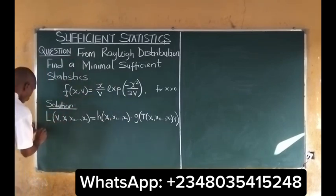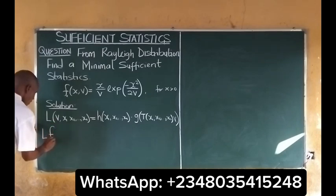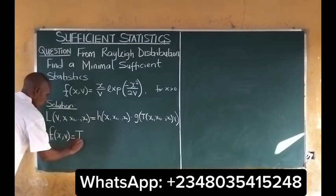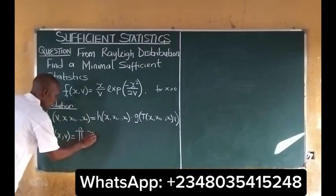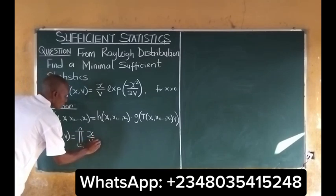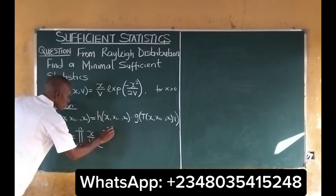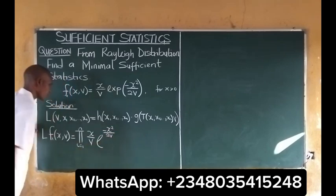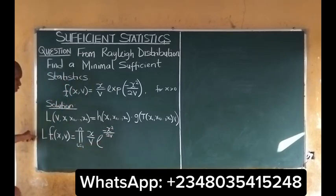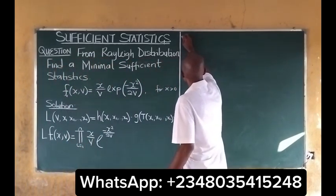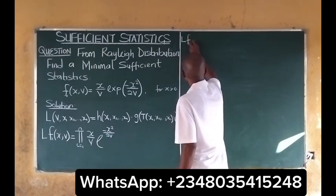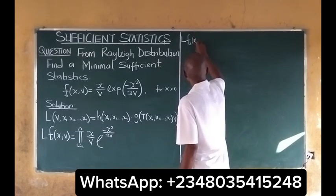So the first thing to do is to look for the likelihood function of f(x), which is equal to the product for i running from 1 to n of x over v, times the exponential of negative x squared all over 2v. We can expand this to give the likelihood function in the following form.